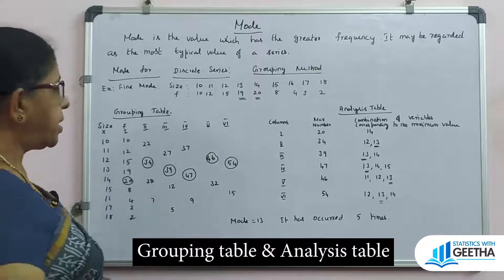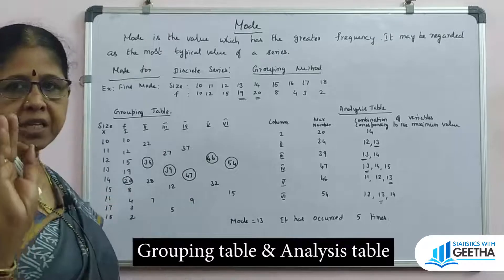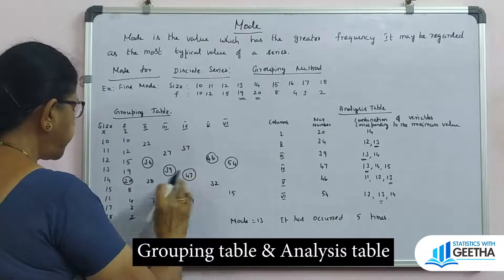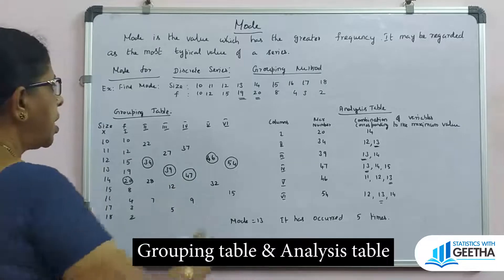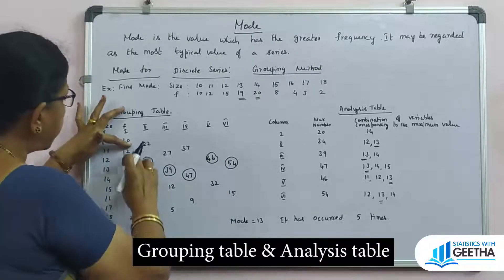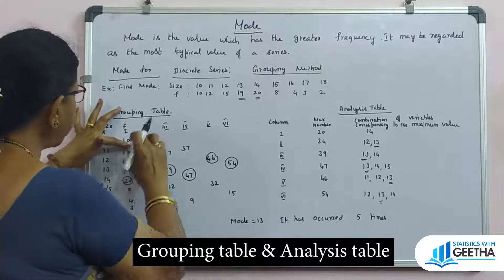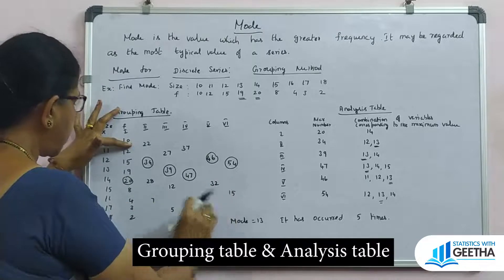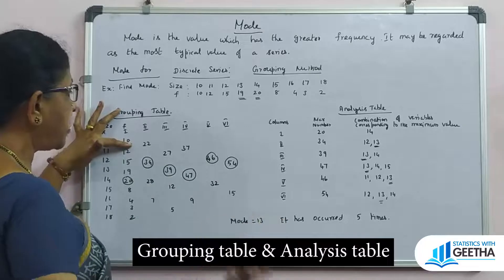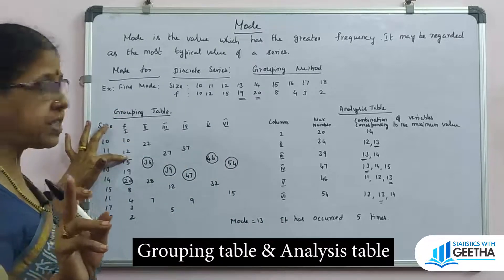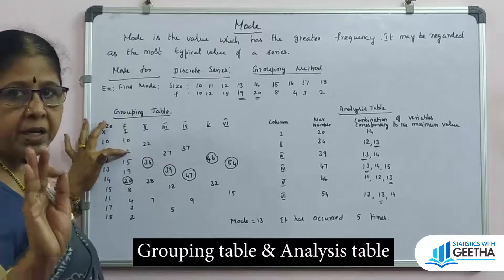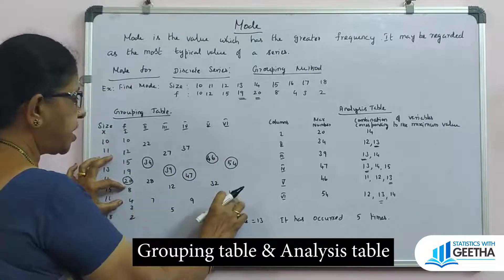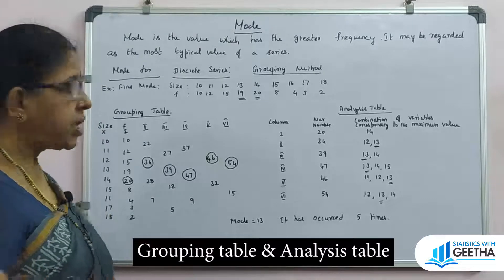For column 5, we leave the first frequency and add the remaining three by three: 12 plus 15 plus 19 is 46, 20 plus 8 plus 4 is 32. For column 6, we leave the first two frequencies and add the remaining three by three: 15 plus 19 plus 20 is 54, 8 plus 4 plus 3 is 15.